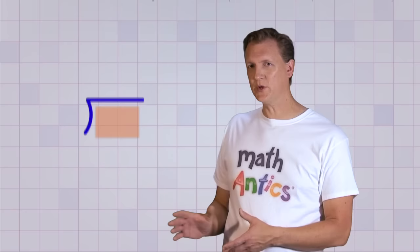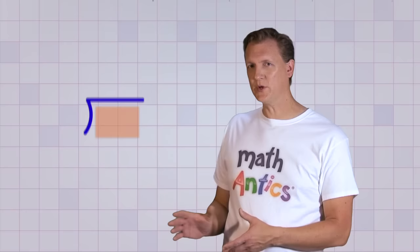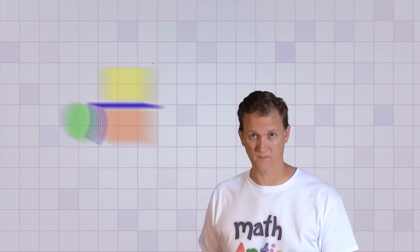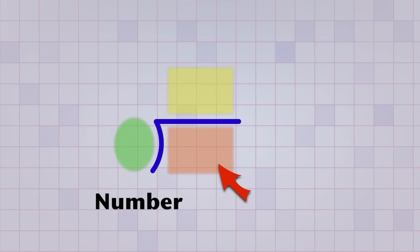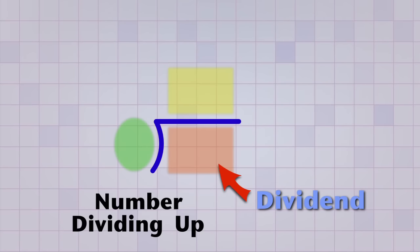This division symbol is special because it's almost like a stage that will help us solve our division problem. And there's 3 special areas of this stage where the 3 main parts, or characters, of our division problem will go. The first area is here under the long horizontal line on our division symbol. This is the area where we put the number that we'll be dividing up. The fancy math term for this is the dividend. Most of the time, the biggest number will go here because we usually start with a big amount and want to divide it into smaller groups.